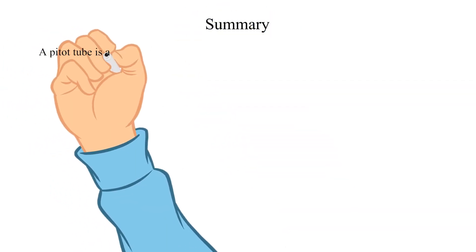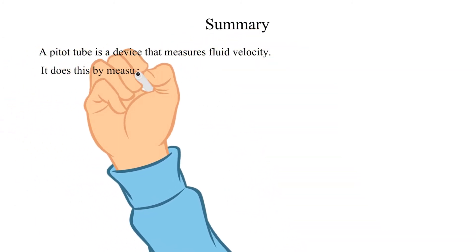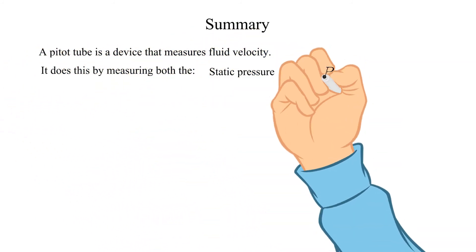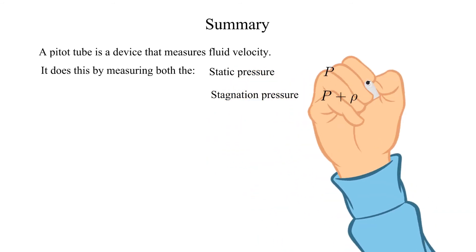A pitot tube is a device that measures fluid velocity. It does this by measuring both the static pressure, P, and the stagnation pressure, P plus one half rho V squared.